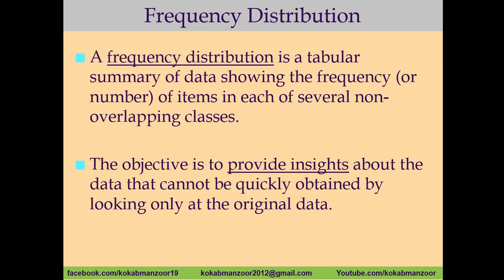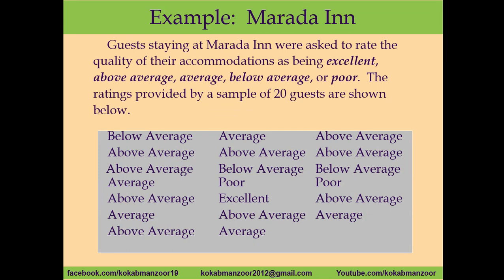What is frequency distribution? Frequency distribution is basically a tabular summary of data showing the frequency — the number of items in each of several non-overlapping classes. When we collect data, we have it in jumbled form. We classify it and put it into a table, and against certain variables we have certain numbers. That is called frequency distribution, because we want to get meaning out of the data.